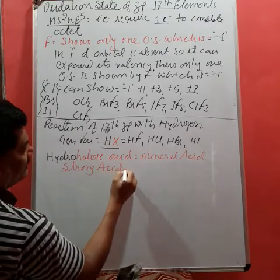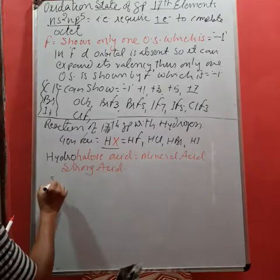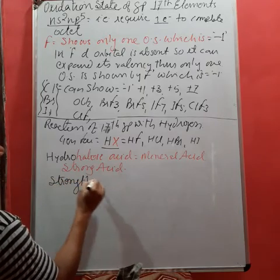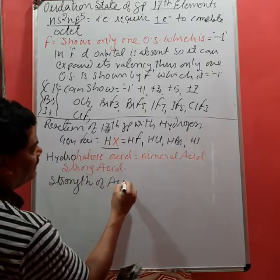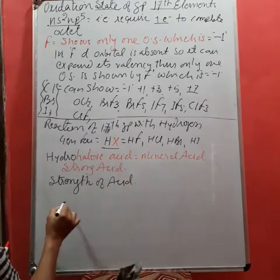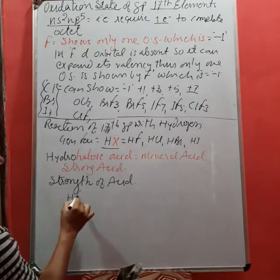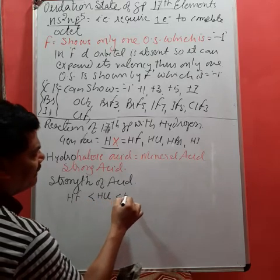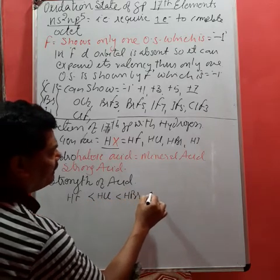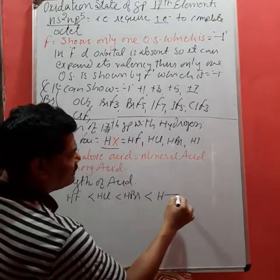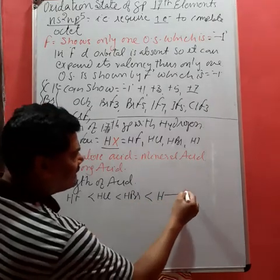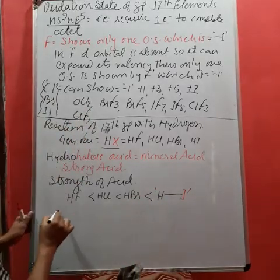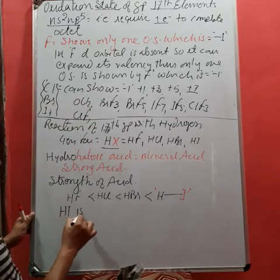Strength of acid is also very important. The strength of acid: HF is weakest, HCl is stronger, HBr is even stronger, while the strongest acid is HI.